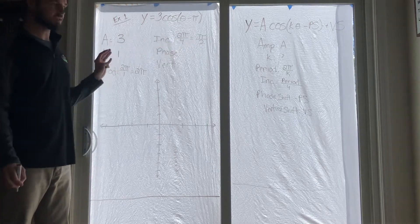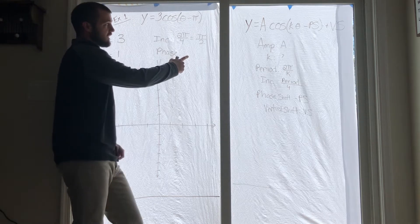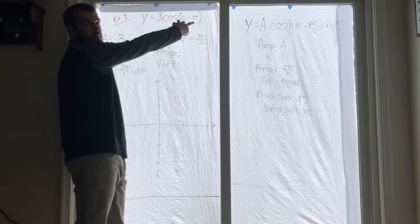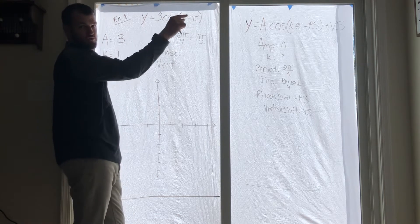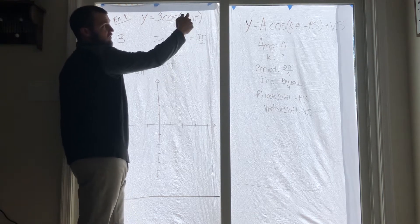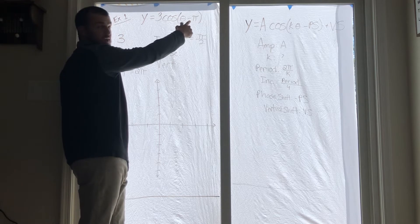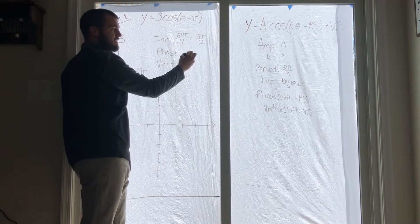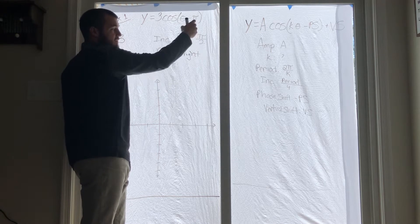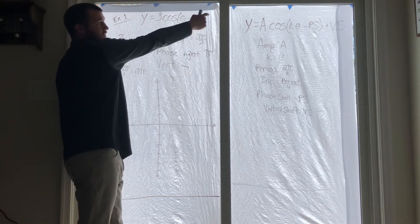Our phase shift — we have something inside the parentheses, right? Remember, inside parentheses is your left and right shift. So think about it: is it going left or right? It's the same thing you always did — it's the opposite of what's in there, so we're going right pi.